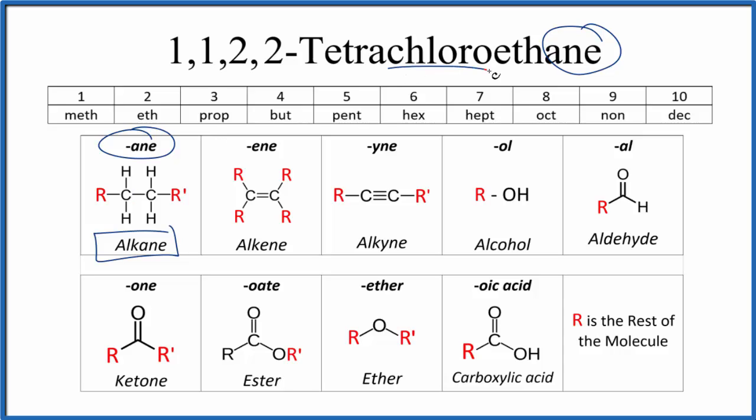We also know we'll have some chlorine atoms because of the chloro. So we have ethane. Eth means two. When you see eth, that means two carbons attached with single bonds.